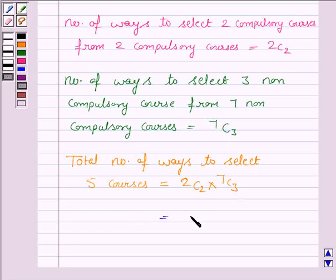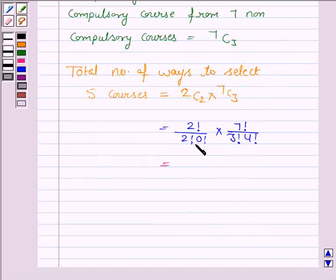And this is equal to 2 factorial upon 2 factorial into 0 factorial, into 7 factorial upon 3 factorial into 4 factorial. And it is equal to 1 into 7 factorial, which can be written as 7 into 6 into 5 into 4 factorial, and 3 factorial can be written as 3 into 2 into 1 into 4 factorial.